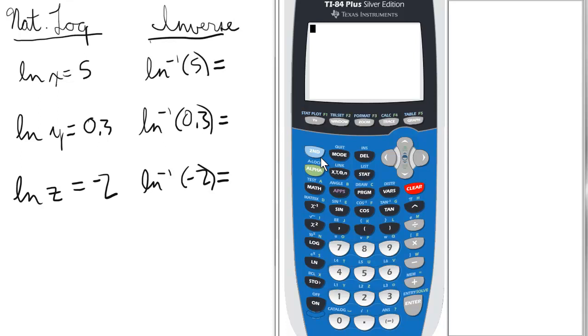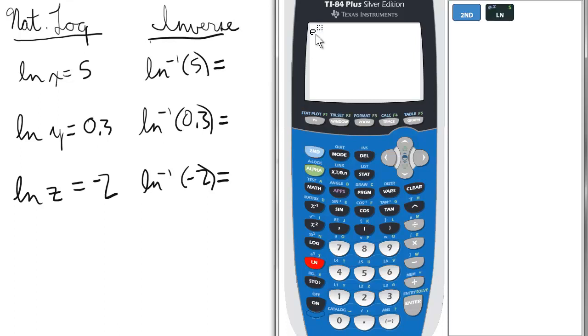On the calculator, to access the ln to the negative 1, which is the inverse log function, we just press 2nd and ln. Notice it's e raised to the power.